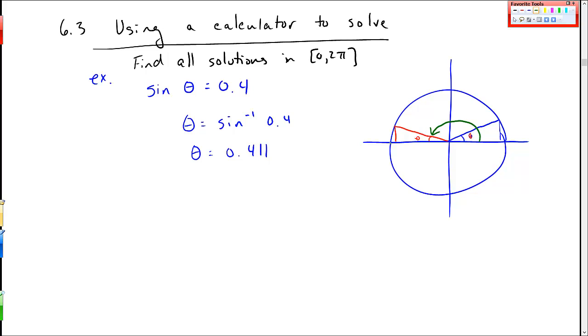Now to find that, I take this π and subtract this red angle theta. So to find green, to find this green theta, I take π and subtract 0.411, the measure of that other angle.